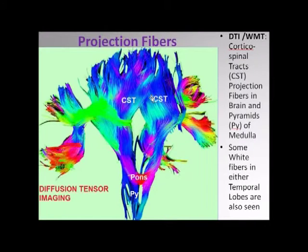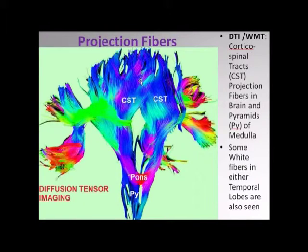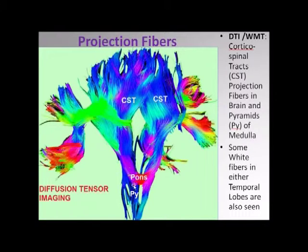This is another picture — a DTI, diffusion tensor imaging with white matter tractography of the projection fibers. More specifically, one component of the projection fibers inside the internal capsule, which is referred to as the corticospinal tract. This is one side's corticospinal tract descending through the pons into the medullary pyramids, and this is the other corticospinal tract.